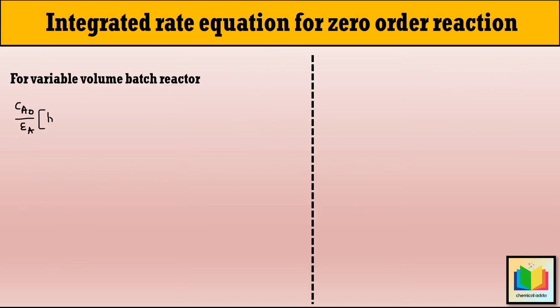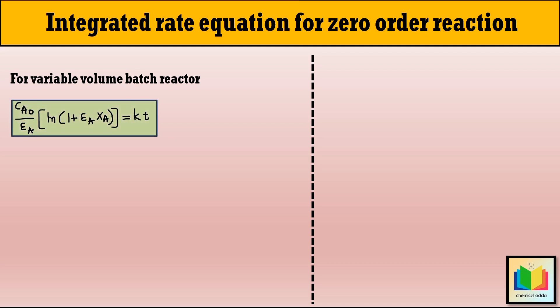Hence, for a variable volume batch reactor, there are two kinds of integrated rate equations for zero order reactions.